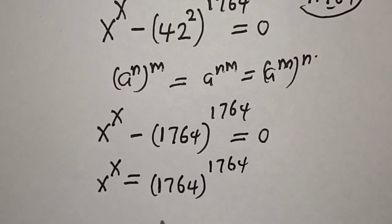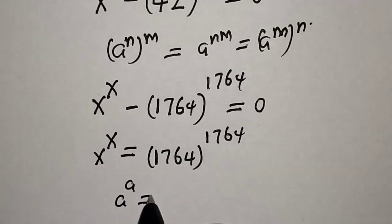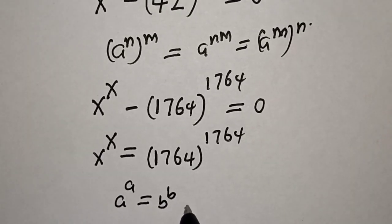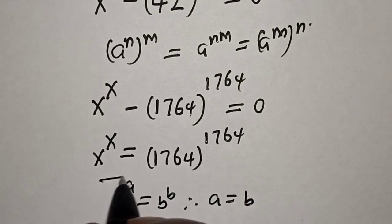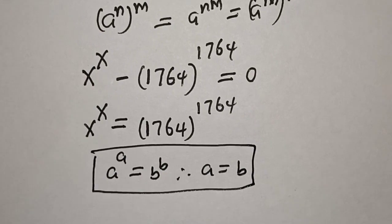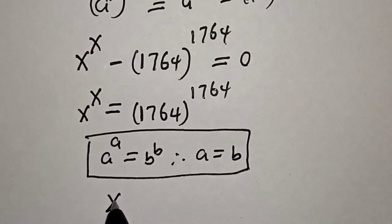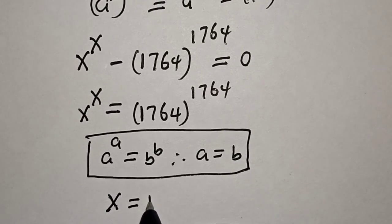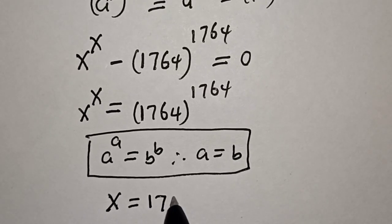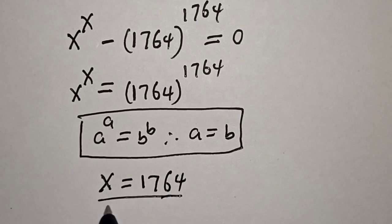Using the rule that if a raised to power a equals b raised to power b, then a equals b. Therefore, from this equation, x is equal to 1764. That is our final answer.